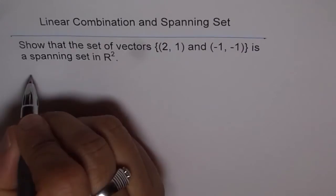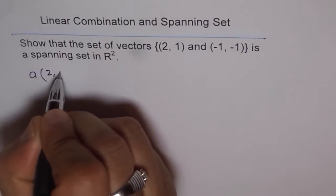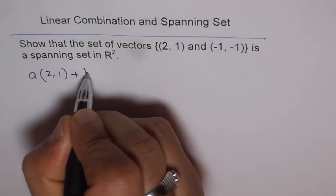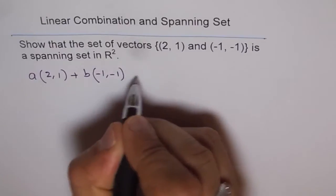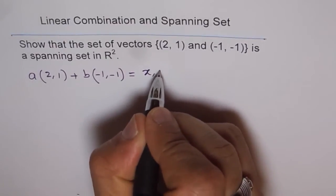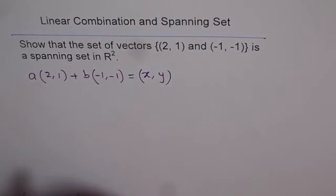That is, it means that a times, where a is a real number, (2, 1) plus b times the other vector (-1, -1), should be equal to any vector (x, y) in R². That is what it means.